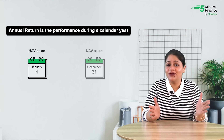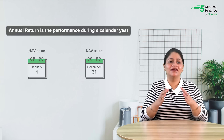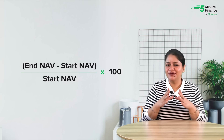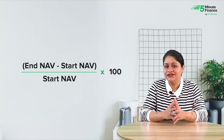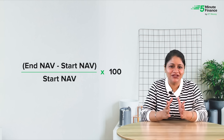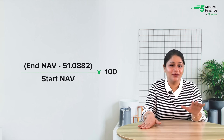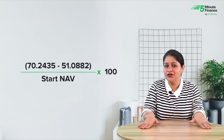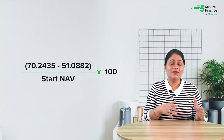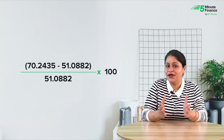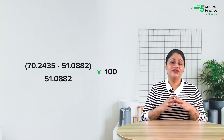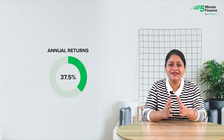The annual return of a mutual fund shows its performance for the calendar year. The calculation is simple: take the NAV as on January 1st of the year and the NAV as on December 31st of the same year, then apply the formula shown on screen. For Parag Parikh Flexicap Fund in 2023, the NAV on January 1st was 51.0882 and on December 31st was 70.2435. So (70.24 − 51.088) ÷ 51.088 × 100 gives an annual return of 37.5%.